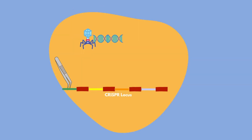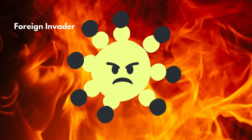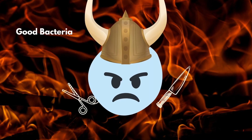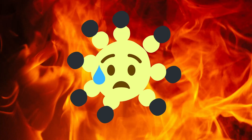Once the protospacer is added to the CRISPR locus, the bacteria saves it as memory, just like how our immune system uses antibodies to detect the antigen. If the same pathogen re-approaches, the bacteria is then armed and ready to destroy it, just like how our immune system can.